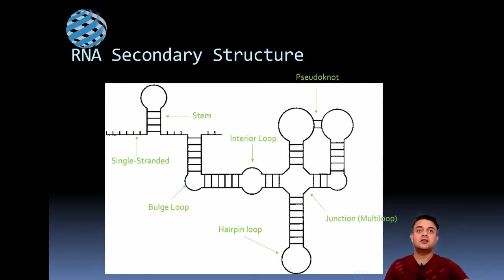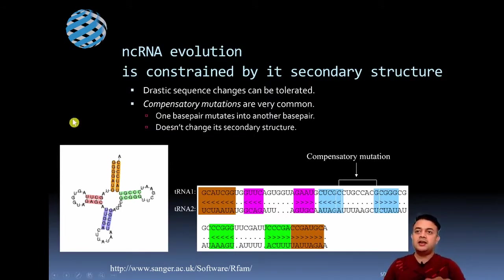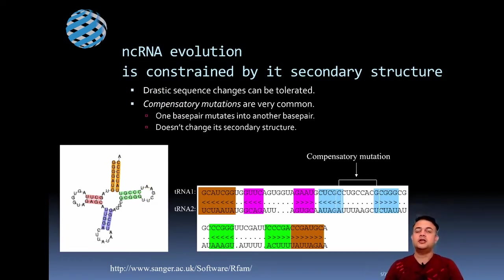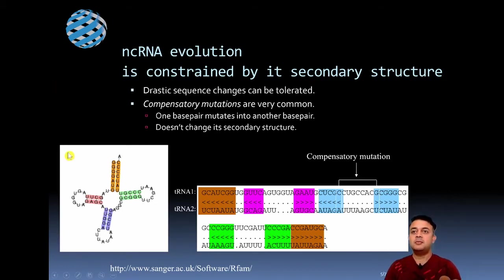Non-coding RNA evolution is constrained by its secondary structure — drastic sequence changes cannot be tolerated. Compensatory mutations are very common: one base pair mutates into another base pair, maintaining the secondary structure. For example, in this molecule you can see UUGC — if U changes, then G also needs to change to maintain the stem region's secondary structure. This is illustrated with an example showing that if a G changes, the paired region must also change to maintain internal base pairing.